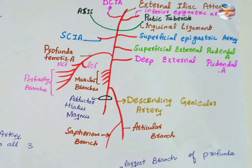In the femoral triangle, the femoral artery gives off three superficial and three deep branches. The three superficial branches include the superficial external pudendal artery, the superficial epigastric artery, and the superficial circumflex iliac artery.